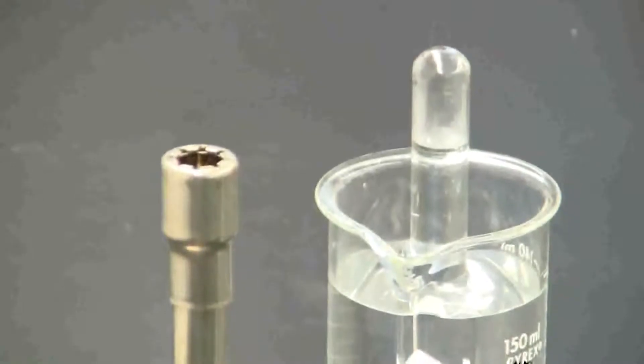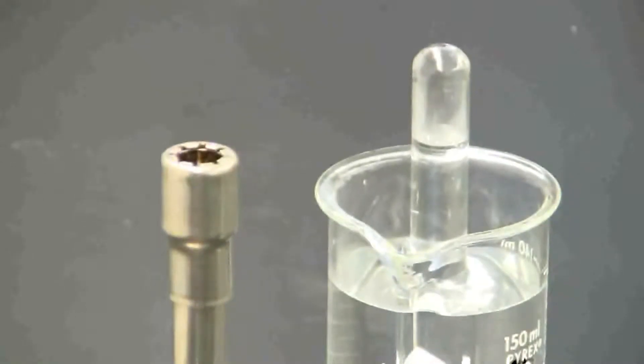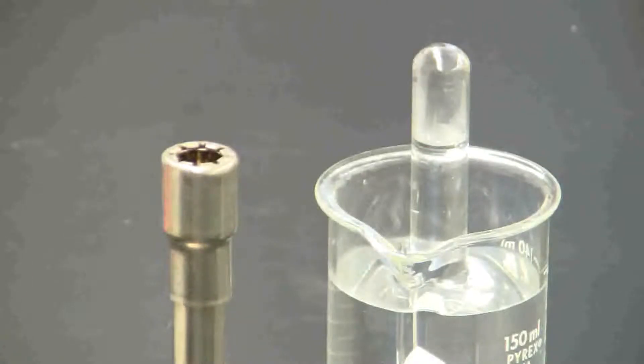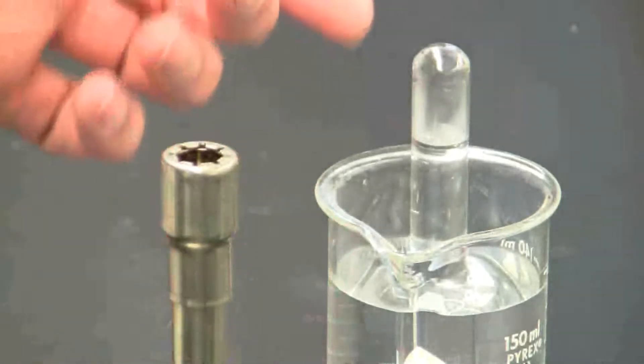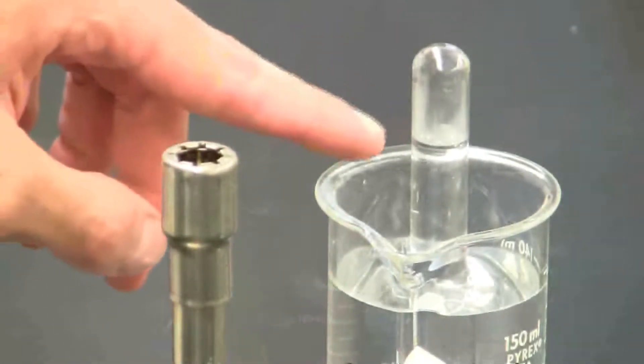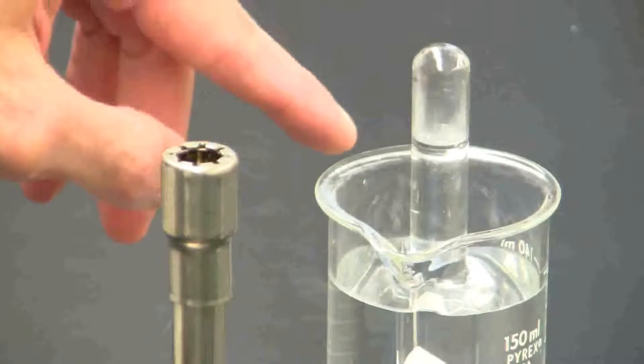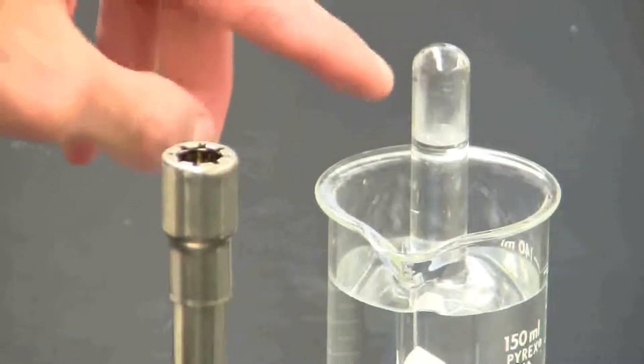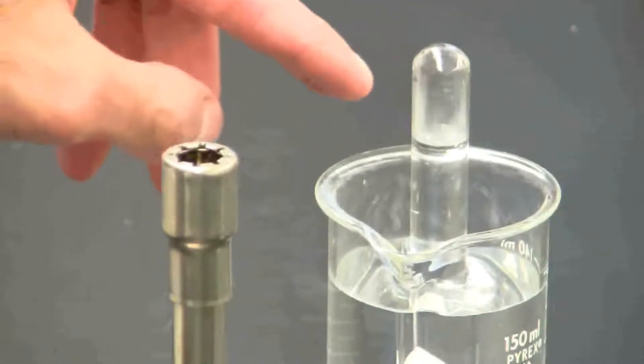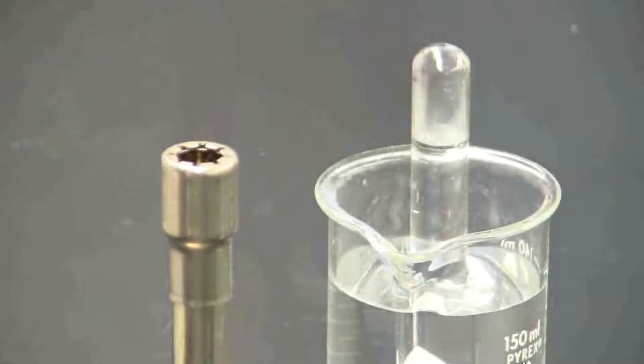This is a simple demonstration of Charles' Law. Charles' Law relates temperature to volume. So here I have a beaker with water in it and a test tube. And I have filled the test tube with water so that just a small amount of air is in the bottom of the test tube there.